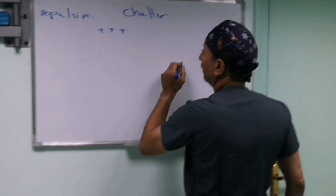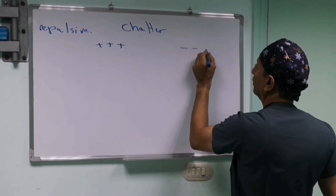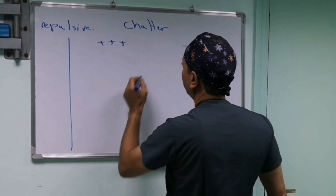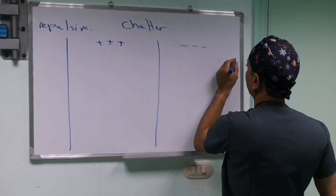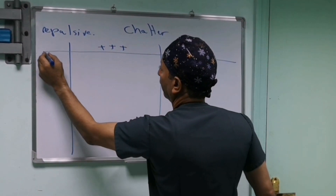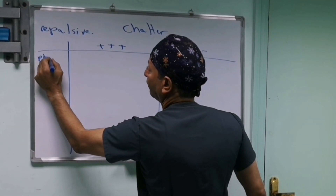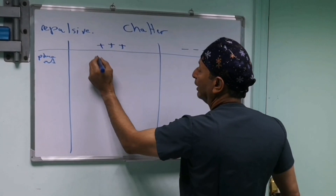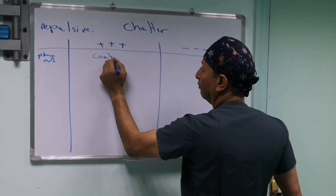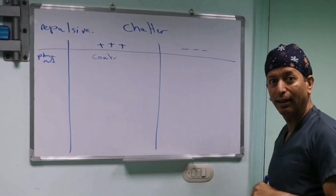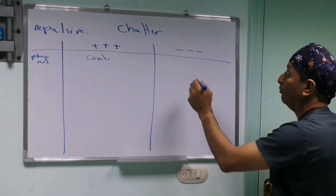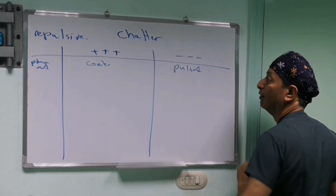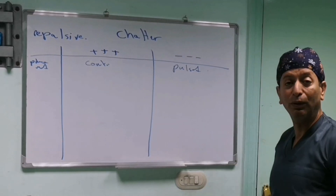There are things that will increase shutter and there are things that will decrease shutter. If you're using continuous phaco mode, that will decrease shutter. If you use pulse phaco, this will also decrease your shutter.